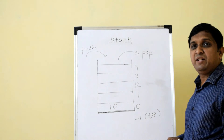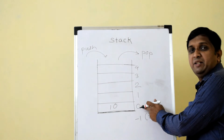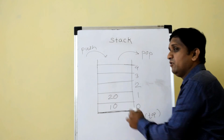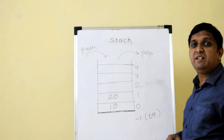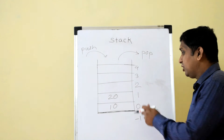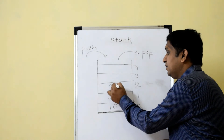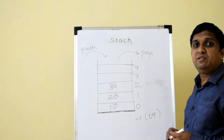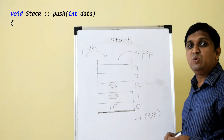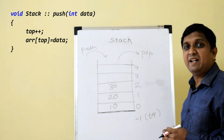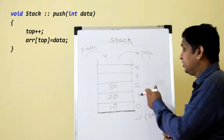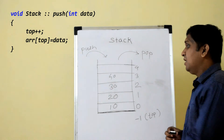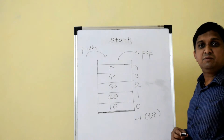If I push the next element 20, top increments from 0 to 1 and 20 is stored at index 1. Pushing again increments top to 2 and 30 is stored there. So the push algorithm is: first increment top, then store the element at the incremented index.